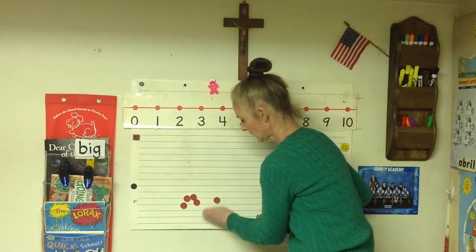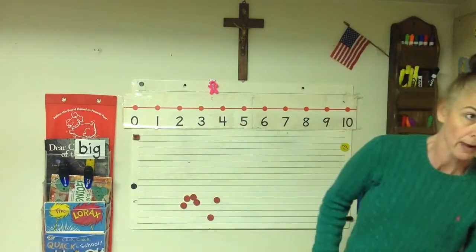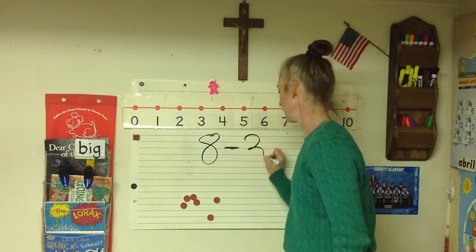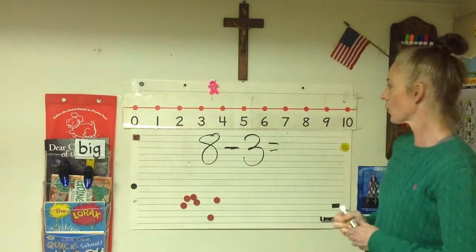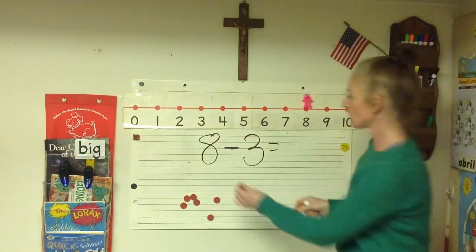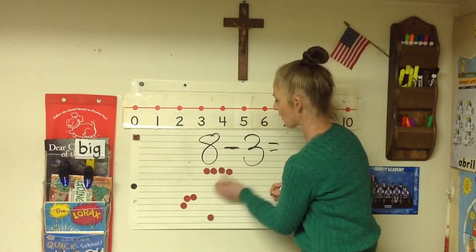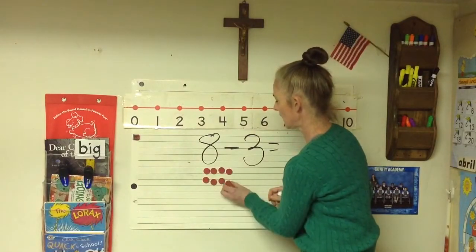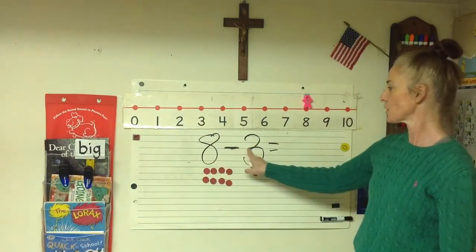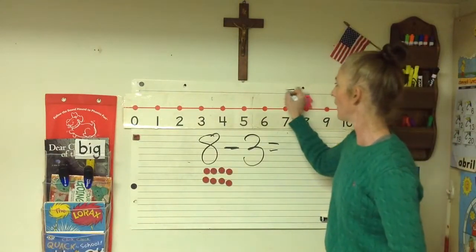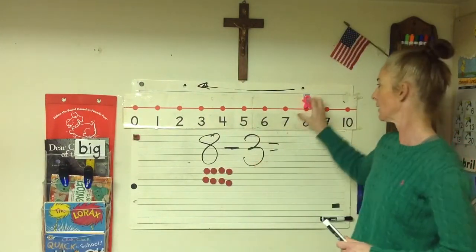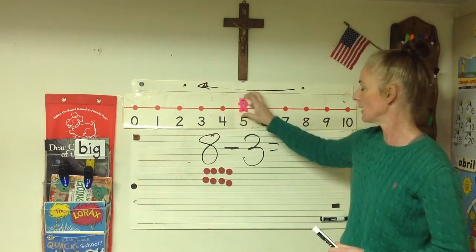Let's do another. This time we're going to do eight minus three equals. We're going to put our character on eight. Eight manipulatives: one, two, three, four, five, six, seven, eight. We start on number eight. Take away minus three — subtract, go back. Back where the numbers get lower; we're making less. We're going to go three steps back: one, two, three. We landed on five.